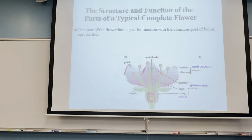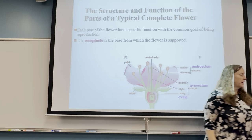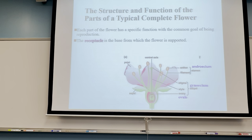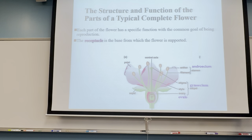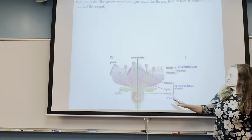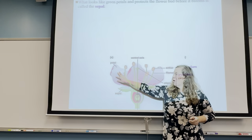Starting at the bottom, the receptacle is the base — actually the top of the stem, not the bottom. It supports the growth of the flower on top. The little green petals that enclose the flower until it blooms are called the sepals. They just protect all of the flower parts until the flower is ready to bloom.